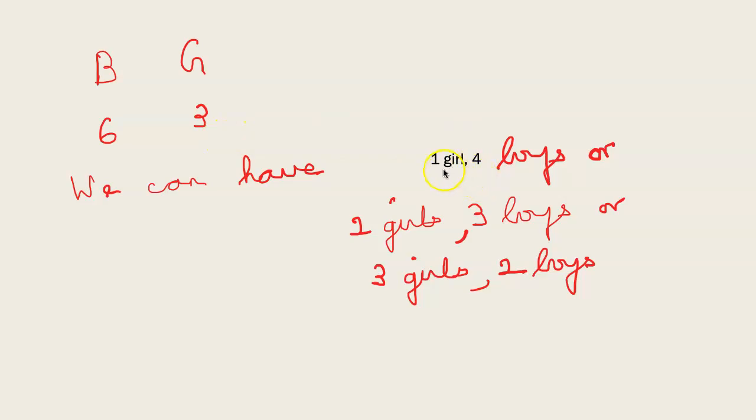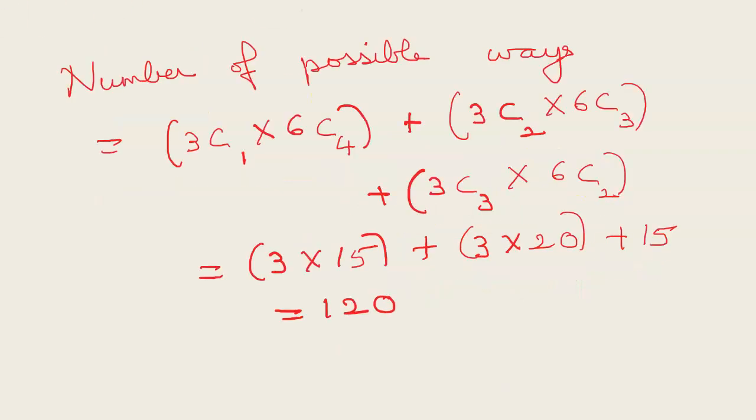We need at least 1 girl. So we can't have all boys also. So these are the possible combinations. Your number of possible ways will be 3C1 into 6C4, 2 girls can be selected from 3 girls into 3C2 into 6C3, plus 3C3 into 2 boys can be selected from 6 boys in 6C2 ways. So simplifying you get the answer as 120.